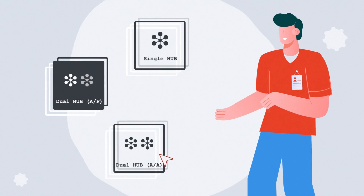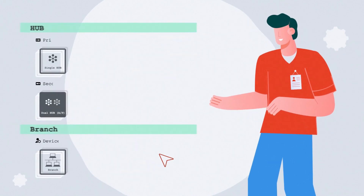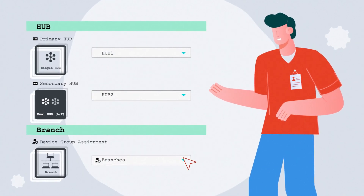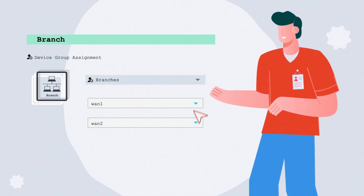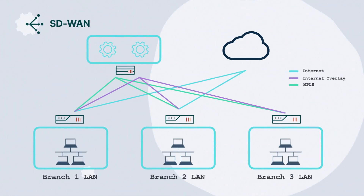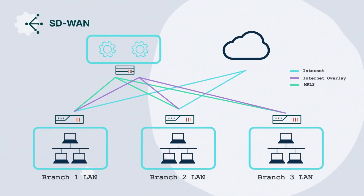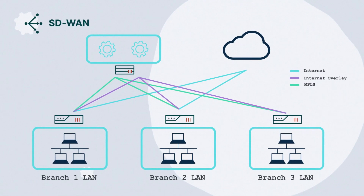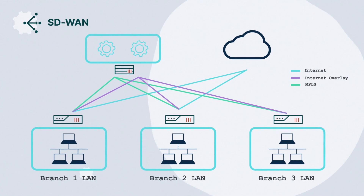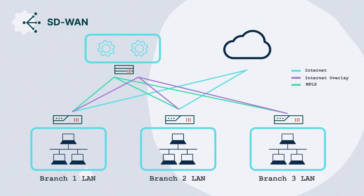Select the topology of your choice, define the device roles within your network, then enter your network settings. Once complete, your SD-WAN network configuration may be applied to the devices in your region.